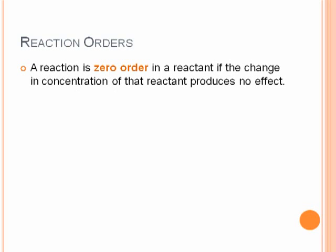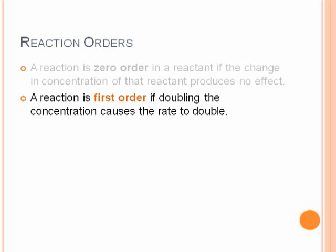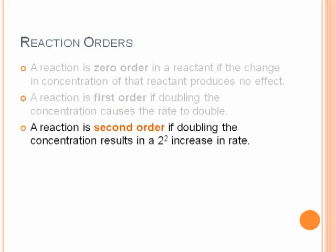The reaction could be 0th order if the reactant concentration does not affect the rate of the reaction. It's first order if I double the concentration and it causes the rate to double, or if I triple the concentration, the rate would triple, and so on. The reaction would be 2nd order if doubling the concentration caused a 2 squared or factor of 4 increase to the rate. If it were times 3, it would be 9.